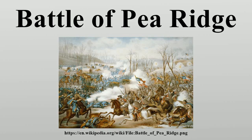Van Dorn sought the Federal rear via the Bentonville Detour. This ran from Camp Stephens, west of Curtis' position, northeast onto the Pea Ridge Plateau, to a 12-corner church which still stands today. Ford Road branched east to Elkhorn. The detour continued northeast, meeting the Wire Road just north of Cross Timber Hollow. South of the Bentonville Detour, west of Cross Timber Hollow, and north of Ford Road lay the militarily impassable Big Mountain.